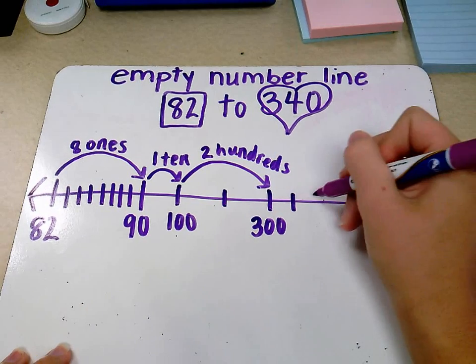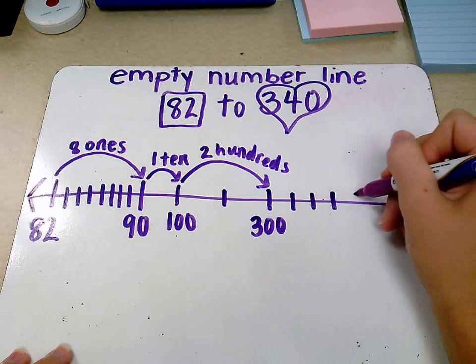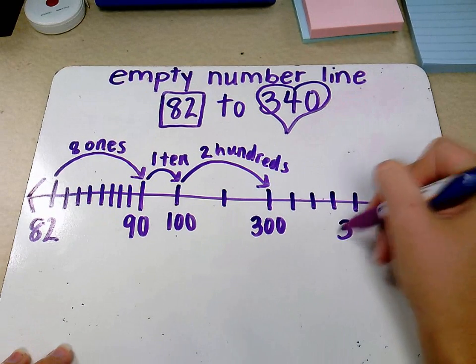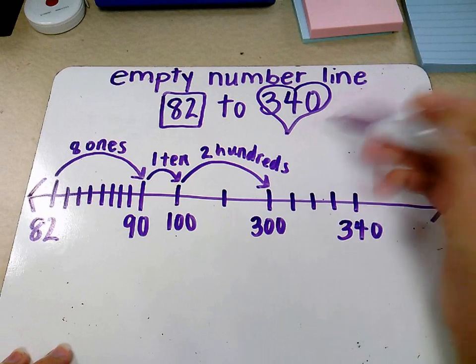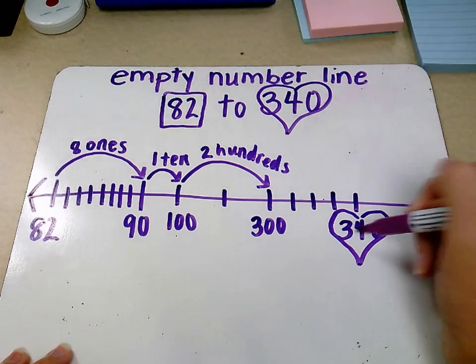300, 310, 320, 330, 340. And look at that. I made it to my goal. I tell the kids, put a heart around it because we're so happy we made it.